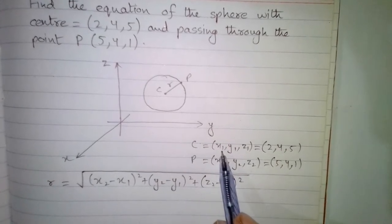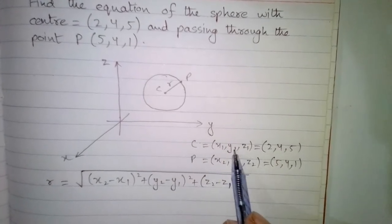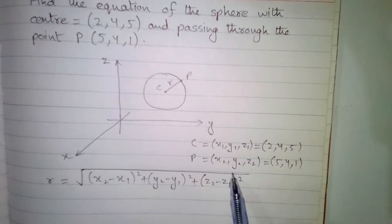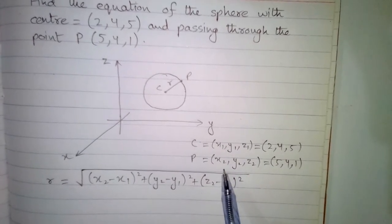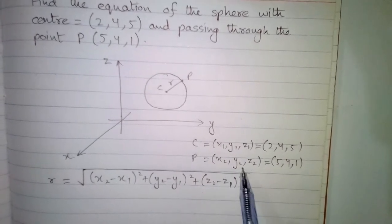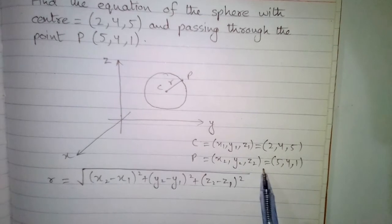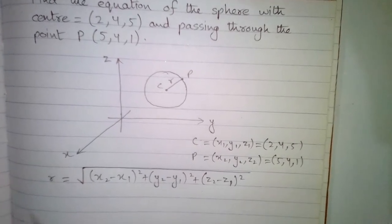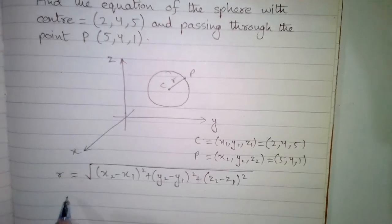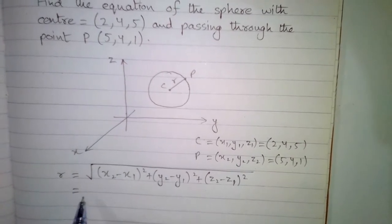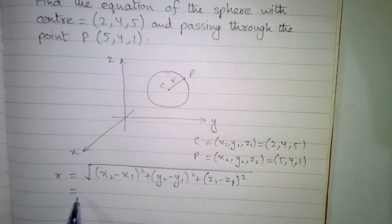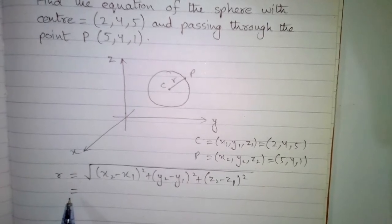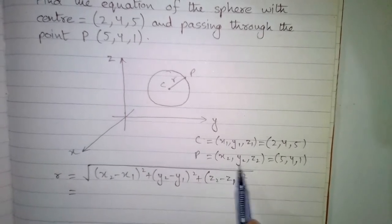So the values of x1, y1, and z1 are 2, 4, and 5 respectively, and the values of x2, y2, and z2 are 5, 4, and 1 respectively. We will now put these values into the formula.